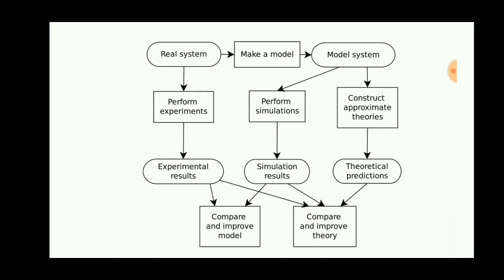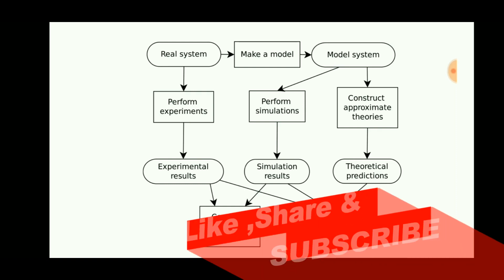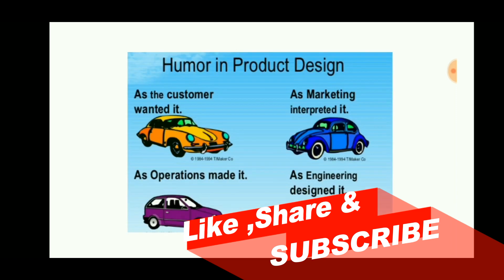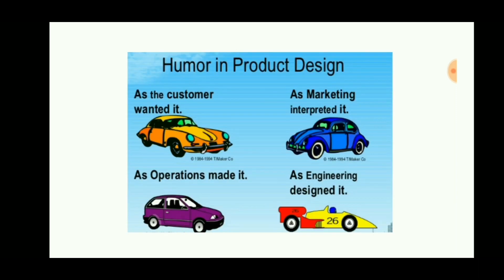For example, a customer wants a big car with a full of space, but as marketing people they want to give a compact car only. When we operate — that is, while manufacturing — both are combined and it will shrink into a normal size.